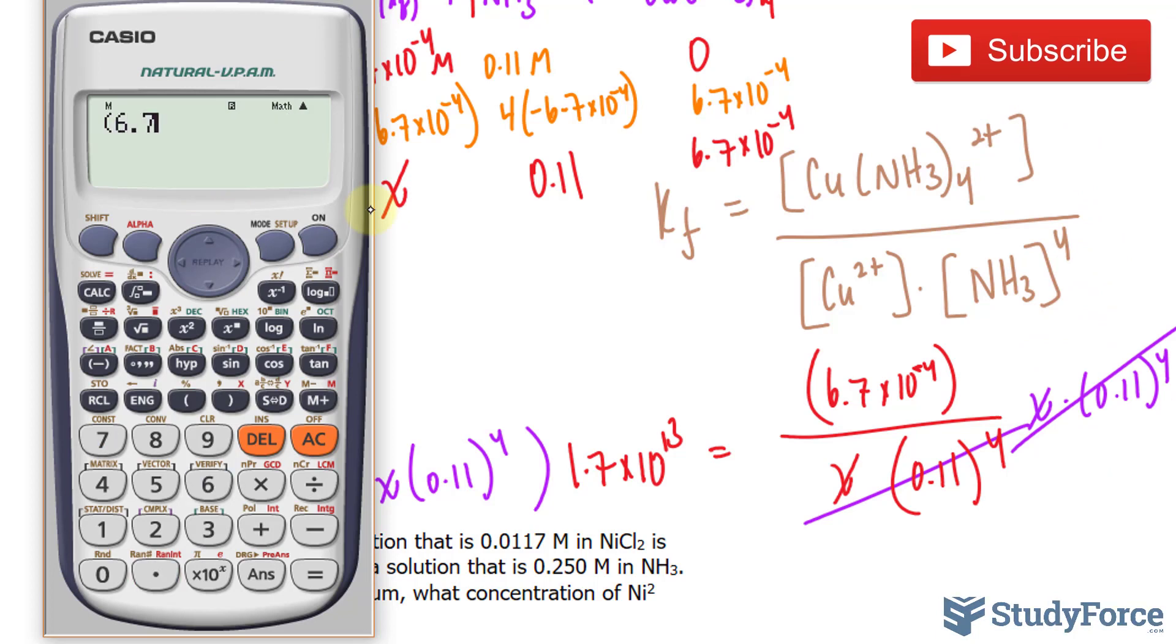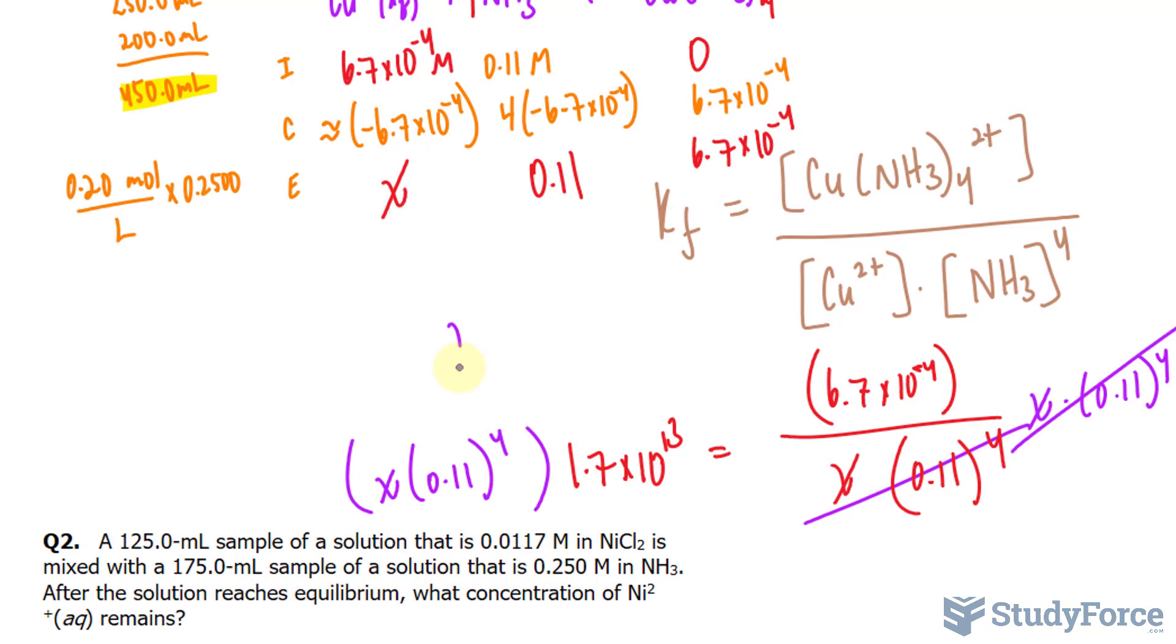So 6.7 times 10 raised to the power of negative 4 divided by the answer that I found, and I get 2.69, which to two significant figures is 2.7 times 10 to the power of negative 13.